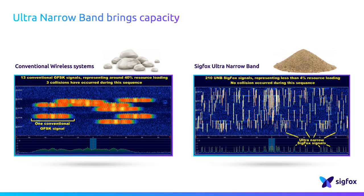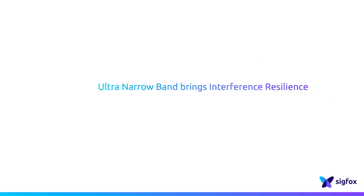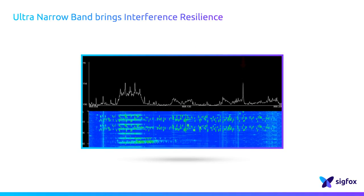Note that several collisions occurred during this test. This comparison shows that conventional systems consume far more bandwidth, whereas SICKFOX's ultra-narrow band enables the network to reach a high capacity. As SICKFOX signal power is concentrated on a narrow band, it provides great robustness against interference. The energy concentration of a SICKFOX signal enables base stations to easily demodulate it, even if more powerful but more spread interferer signals are received simultaneously.